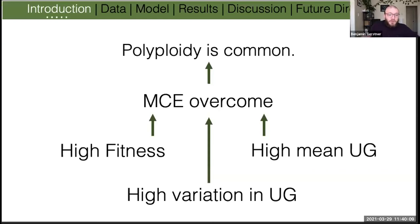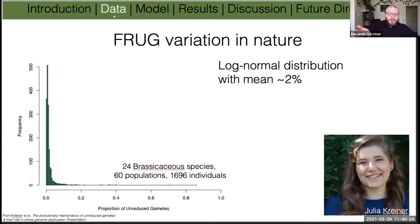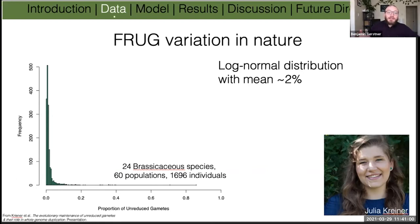I will use empirical data from the literature — specifically from Dr. Kreiner's undergraduate work cataloging variation of frog (formation rate of unreduced gametes) in Brassicaceae species — to help capture this variation. The data shows it's approximately a log-normal distribution with a mean of 2%. Previous models used 2% frog, which makes sense given this mean, but they've left out the variation we see here — and as I'll show, this variation is key to reconciling theory with our observation.